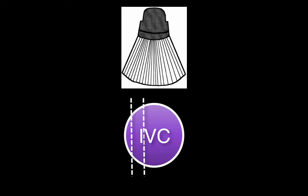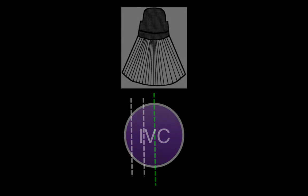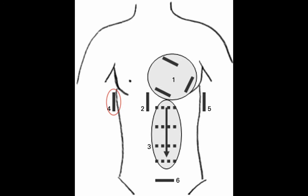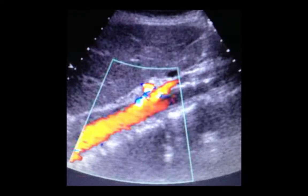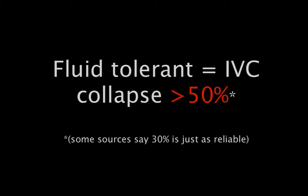Many clinicians also use the subxiphoid short axis view as it is less prone to tangential slices that miss the maximal cross section of the IVC. When these approaches are not effective due to bowel gas, ascites, or cirrhosis, a mid-axillary long axis view is also possible, taking care not to confuse the IVC with the abdominal aorta, which can be confirmed using color Doppler. The patient is considered fluid tolerant with a collapse of greater than 50% with inspiration.